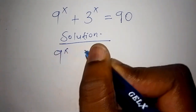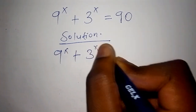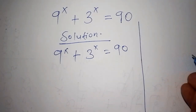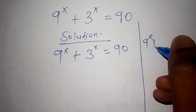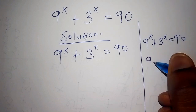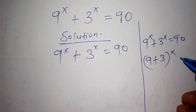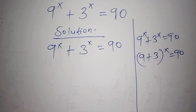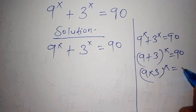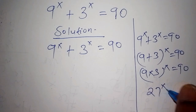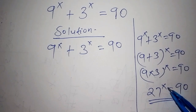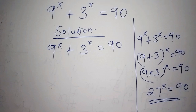So we have 9 to the power of x plus 3 to the power of x equals 90. Now, if we try to work out 9 plus 3, that gives us 9 times 3 in the bracket to the power of x, which equals 90 — giving 27 to the power of x equals 90. However, it is very difficult to factorize 27 to the power of x equals 90 this way.